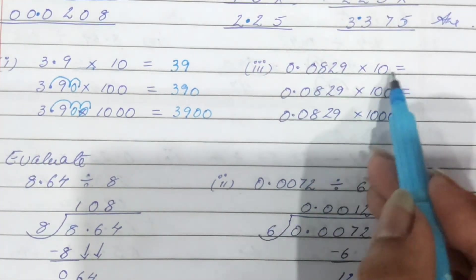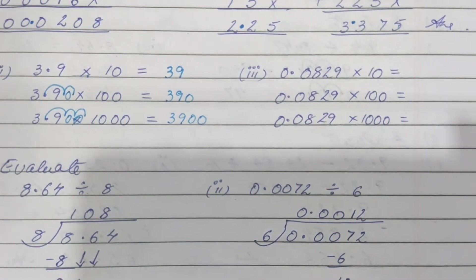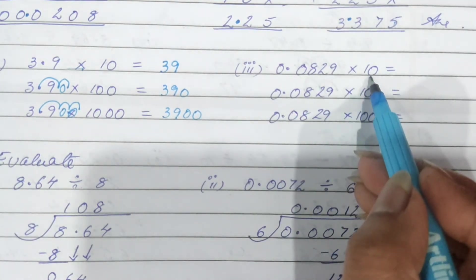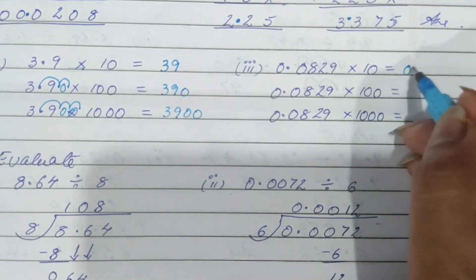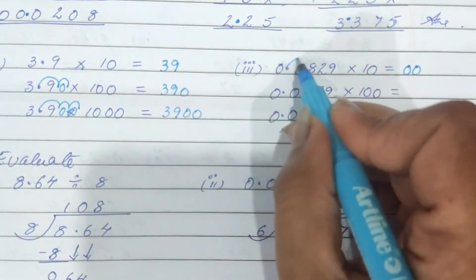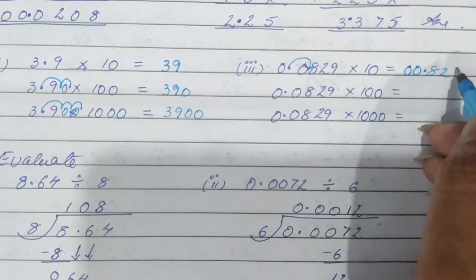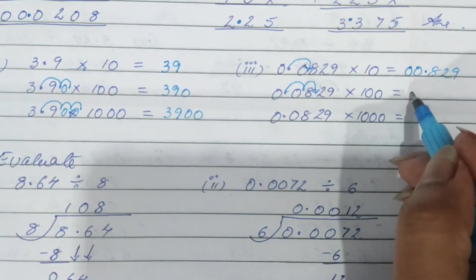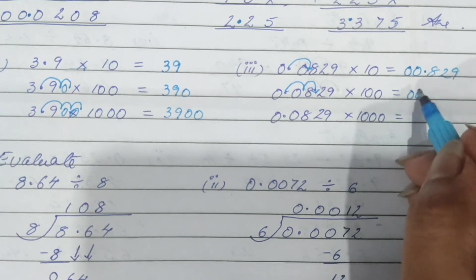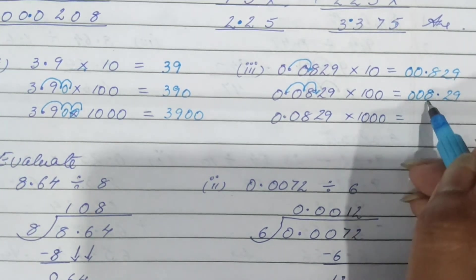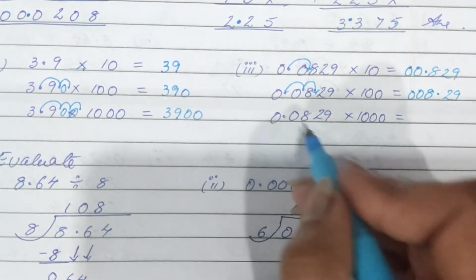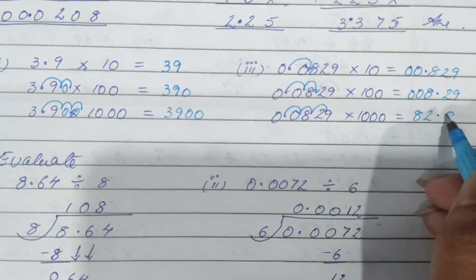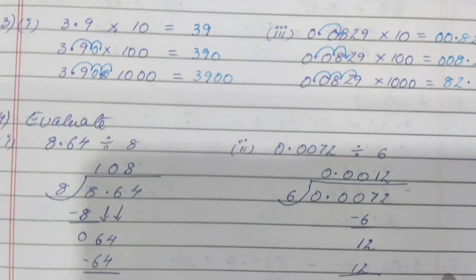Over here also you can see it clearly. When shifting the decimal one place, my number will become 0.0829. With two places — one place and one more — my number becomes 0.00829, which can also be written as 8.29. Then shifting three places: 1, 2, 3 — my number becomes 82.9. This is how you shift your decimals when multiplying.